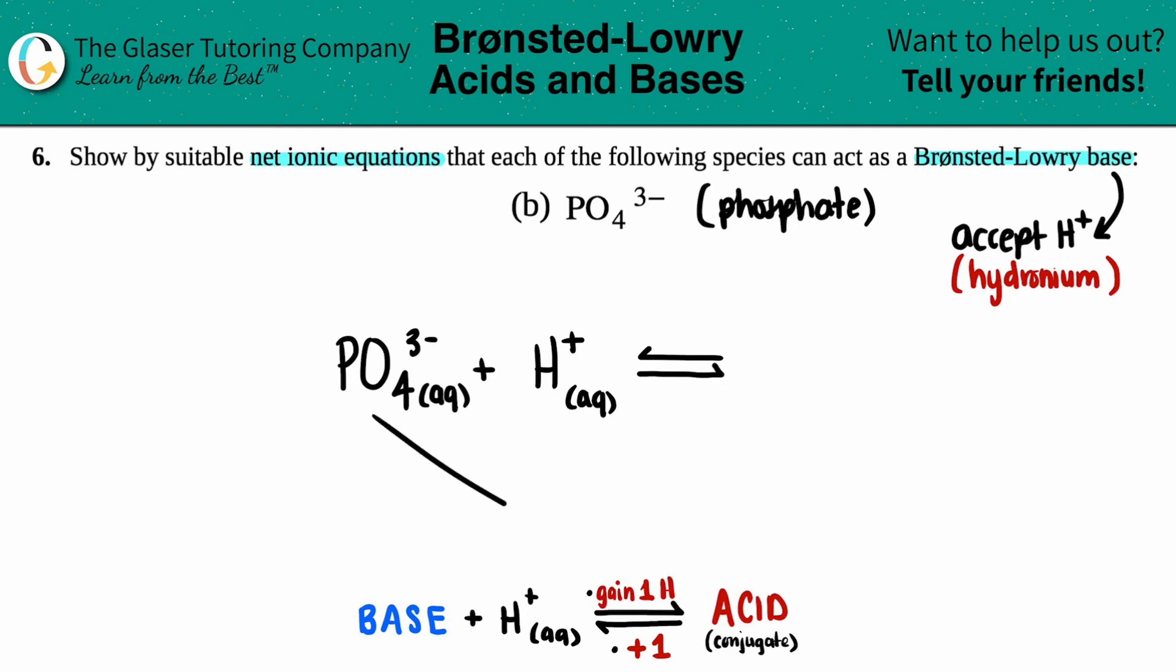Now we need to find the conjugate acid. Just add them up. When writing your acid, the H you gained generally comes first. Now I have an H. The H came with the PO₄, so it's just HPO₄.